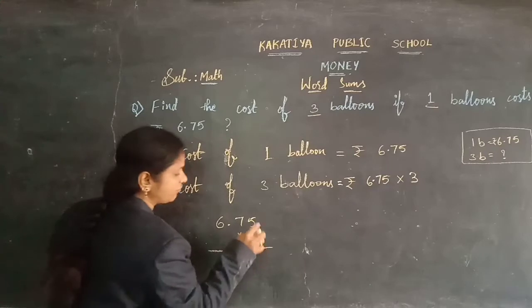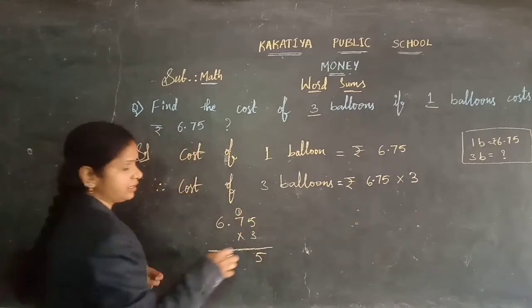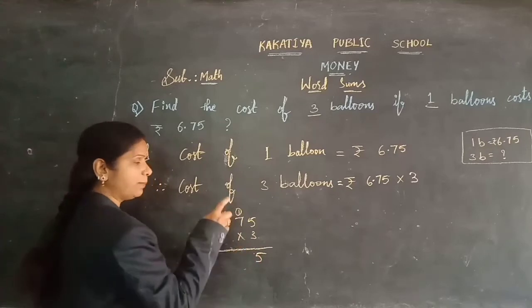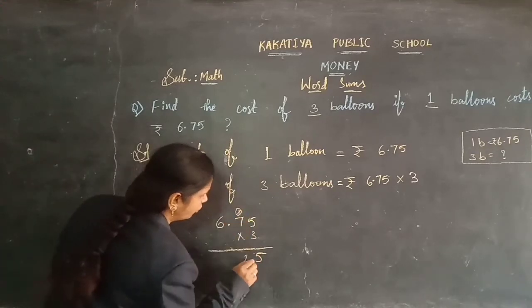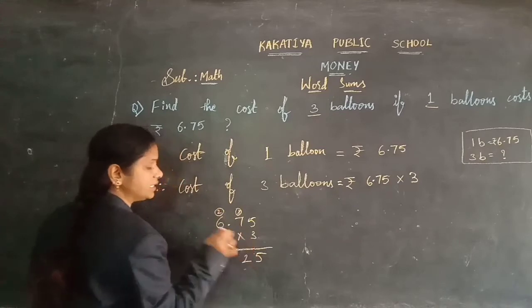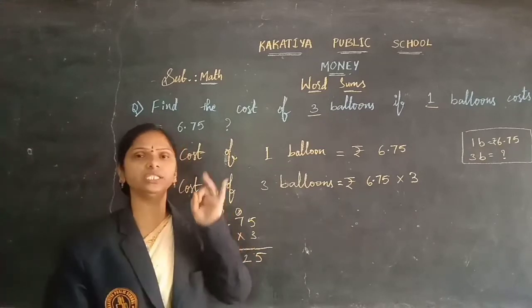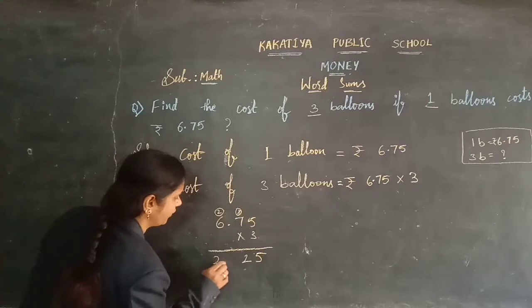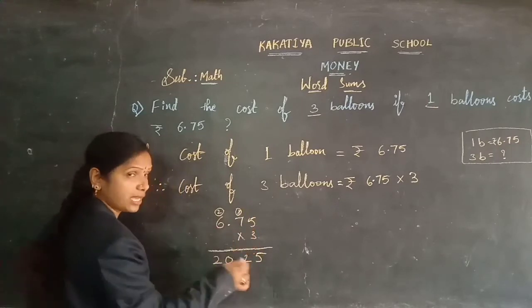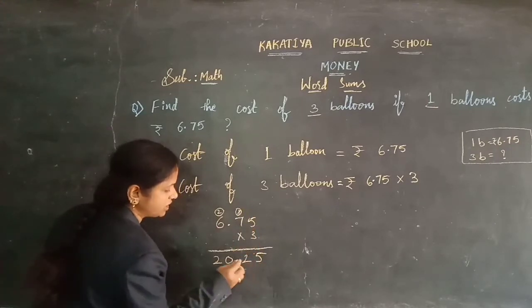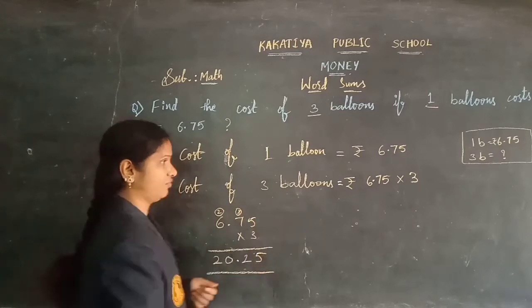6 rupees 75 paise into 3: 3 fives are 15, write 5 carry 1. 3 sevens are 21, plus 1 is 22, write 2 carry 2. 3 sixes are 18, plus 2 is 20. And in the question we have 2 digits before the point, so in the answer also we should keep 2 digits before the point.